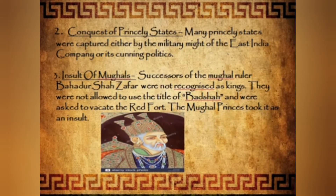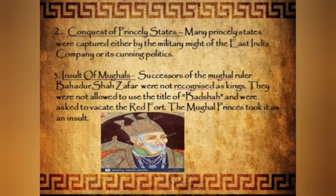Other rulers feared that the annexation of their state was only a matter of time. The refusal to continue the pension of Nana Sahib, the adopted son of Baji Rao II, created hostility among the ruling classes. The sentiments of the people were hurt when it was declared that the descendants of the titular Mughal Emperor Bahadur Shah II would not be allowed to live in the Red Fort. The annexation of Awadh by Lord Dalhousie on the pretext of mal-administration left thousands of nobles, officials, retainers, and soldiers jobless, converting Awadh, a loyal state, into a hotbed of discontent and intrigue.